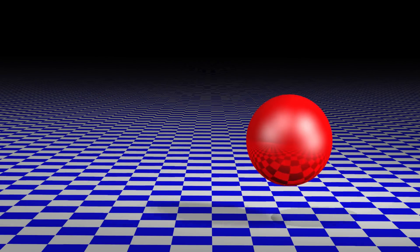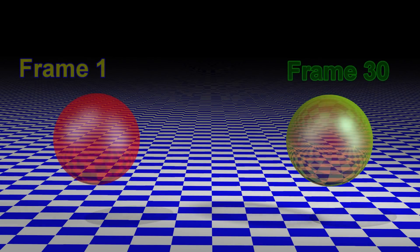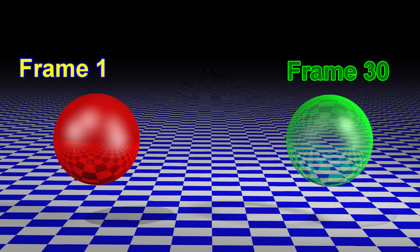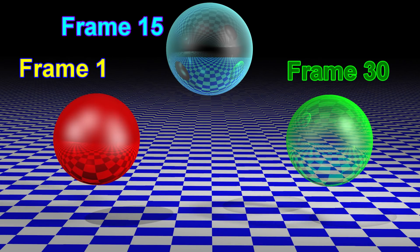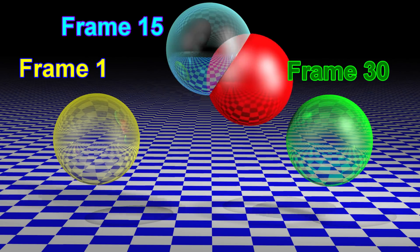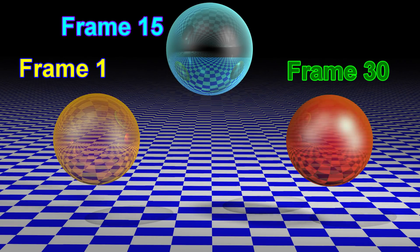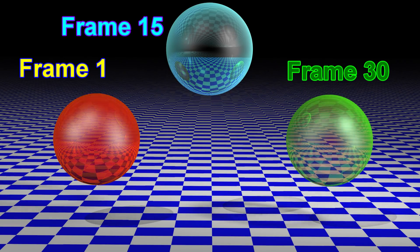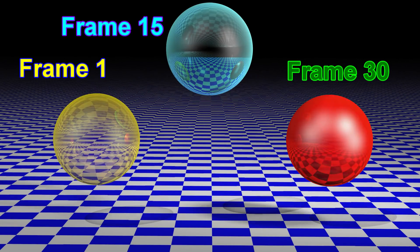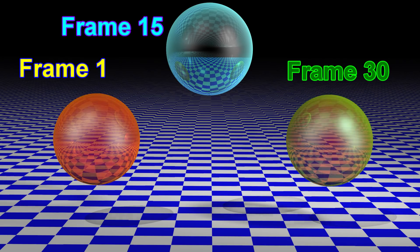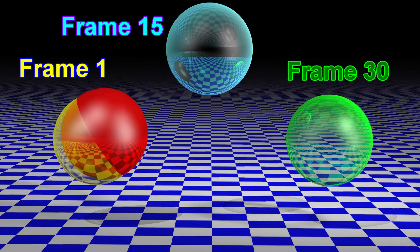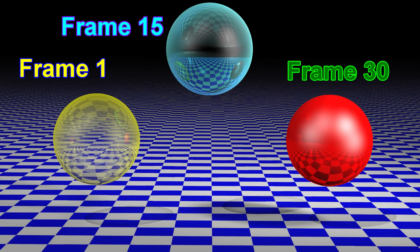If we do not like this path, we can, for example, add an additional key frame at frame 15. We may also tell the animation program whether we want it to interpolate the positions between the key frames as straight lines or as a smooth curve.